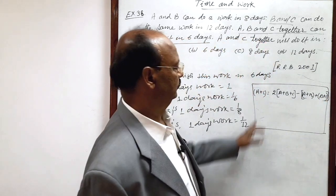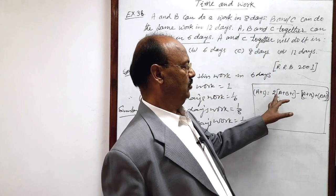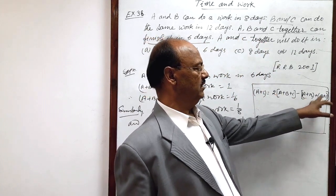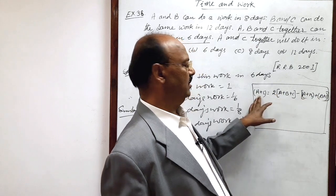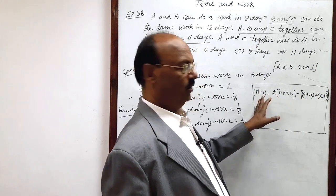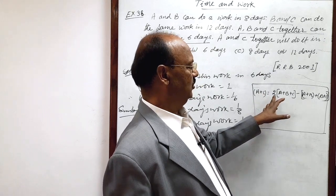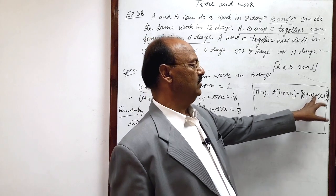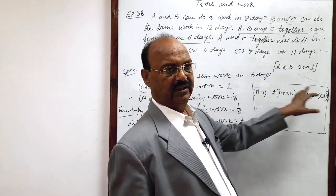Just you check, twice of A, B, C minus A plus B and minus B plus C will give A plus C. So A plus C's work we can obtain by twice of A plus B plus C's work minus A plus B's work and B plus C's work in 1 day.